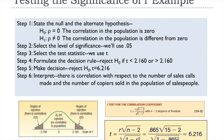With a sample size of 15, degrees of freedom = 15 minus 2 = 13. Using a significance level of 0.05 and Appendix B5, the critical t-value is 2.160. The decision rule is to reject the null hypothesis if t is less than negative 2.160 or greater than positive 2.160, giving us two rejection regions in the tails of the distribution.